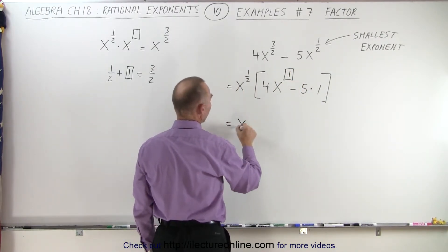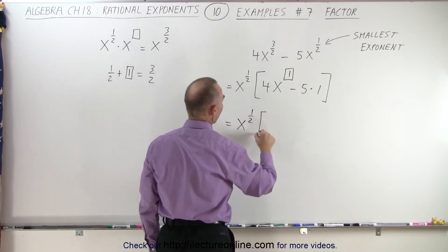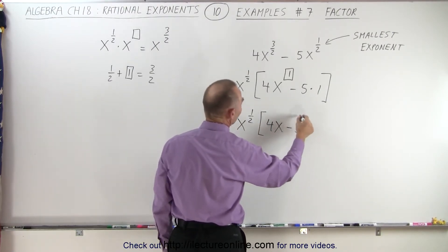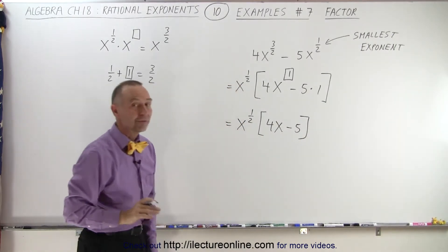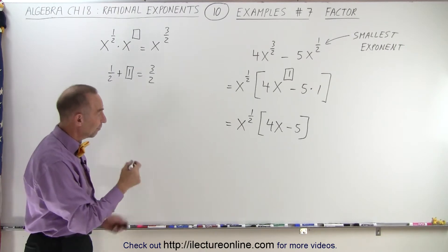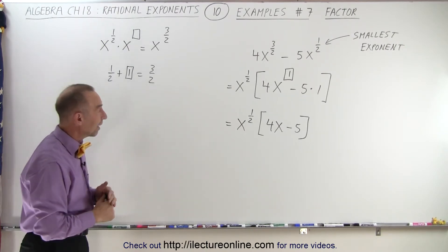Essentially, this is equal to x to the 1 half power times 4x to the 1st power—we don't have to write that—minus 5, and that is how we factor out a factor that has a fractional exponent or a rational exponent.